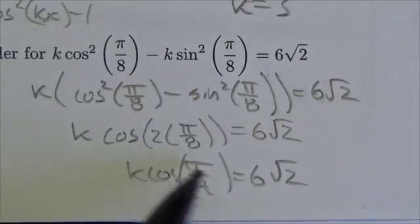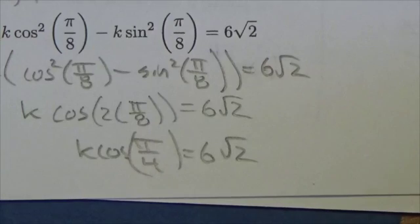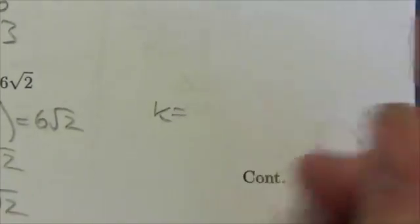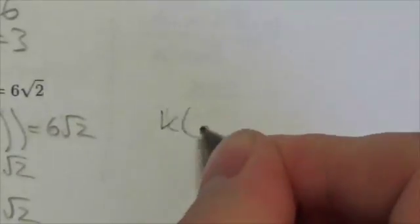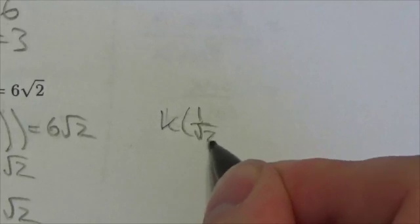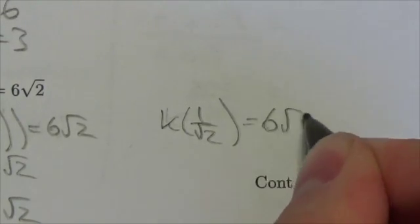Now I just have to evaluate this. The cos(π/4)—and whether you're going to use the special triangles or the unit circle, you should be able to tell pretty quickly that cos(π/4) will simply be 1/√2, which equals 6√2.